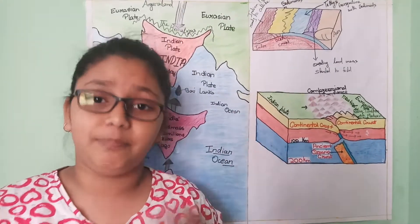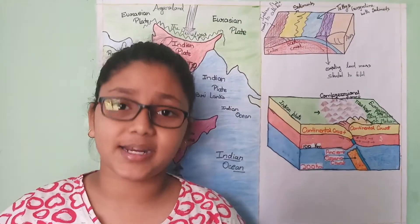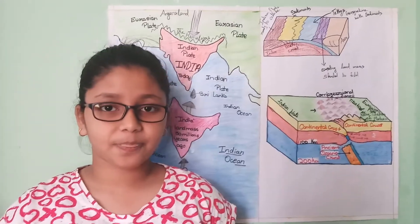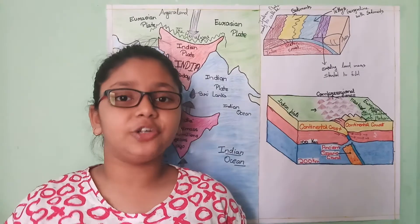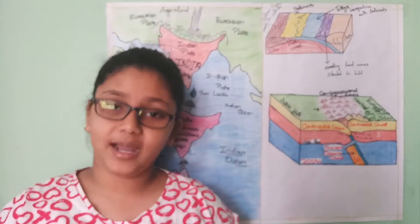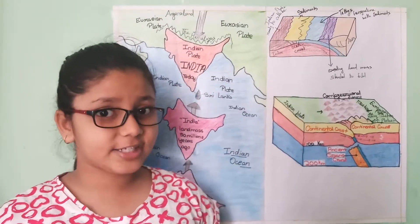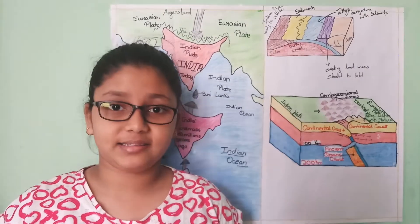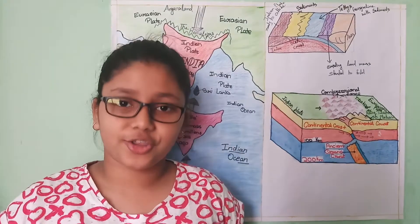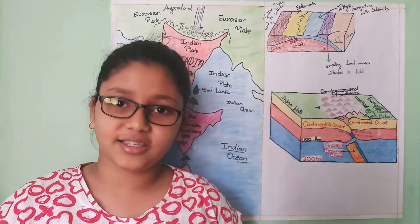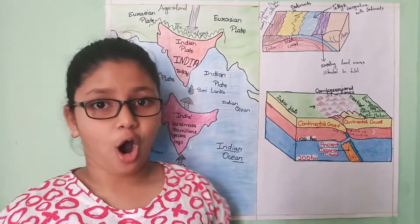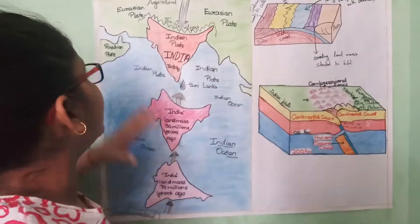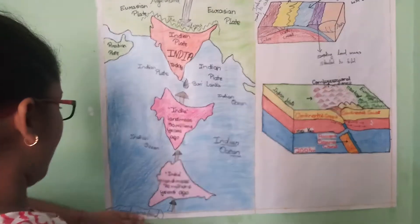Nature has blessed us with a great natural barrier which is between the Indian subcontinent and the rest of Asia, which has helped this region to live in peace and prosperity and to develop its own culture. This story takes us millions and millions of years back into the geological past, where this area now occupied by the Himalayas and the Northern Plains was under a sea called the Tethys Sea, which was sandwiched between two chained land masses — the Angara land in the north and the Gondwana land in the south.